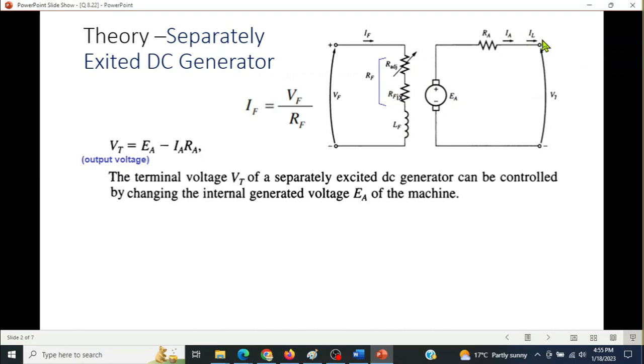This is the generator which is EA and VT. So VT is EA minus drop in the armature winding. VT output voltage is EA minus IA times RA. Now we have terminal voltage VT which we control by controlling EA.